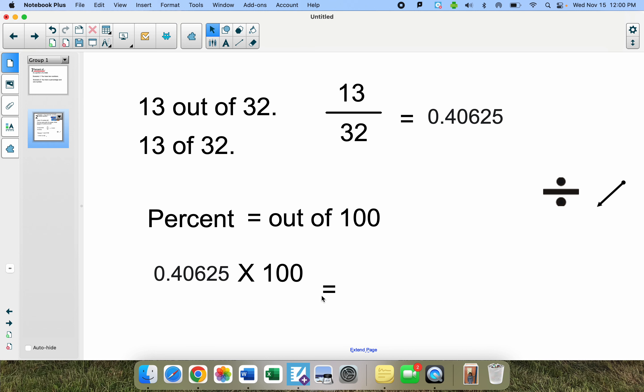And if you were to pull this up on a calculator, you would see that you would get 40.625. Now, if your teacher asks you to round this to the nearest... I forgot to put the percent symbol in there.